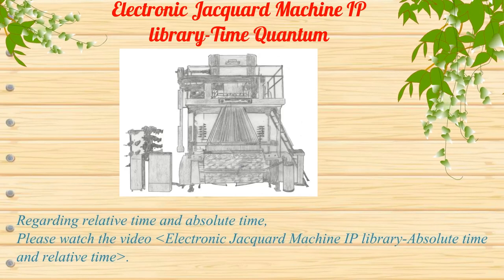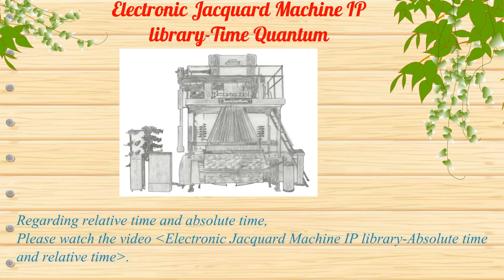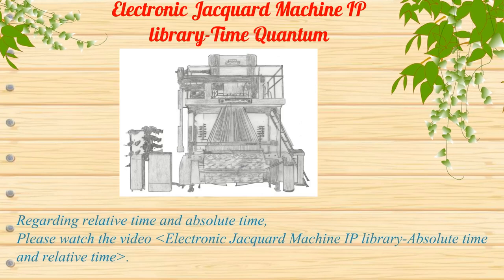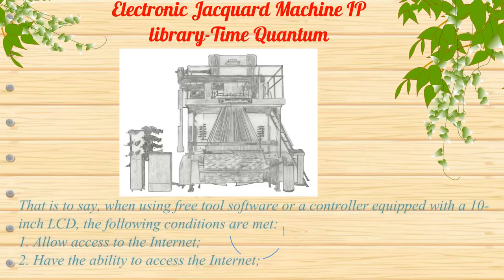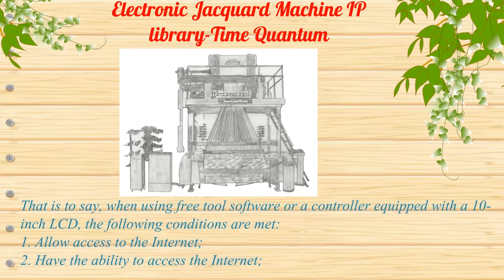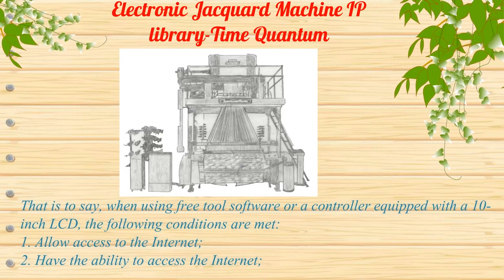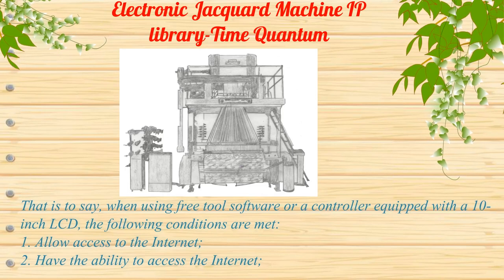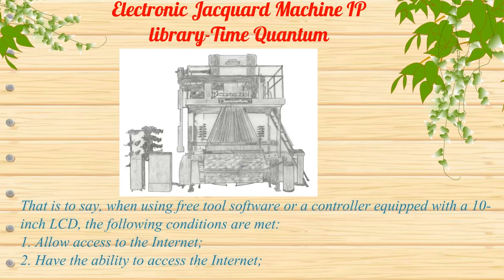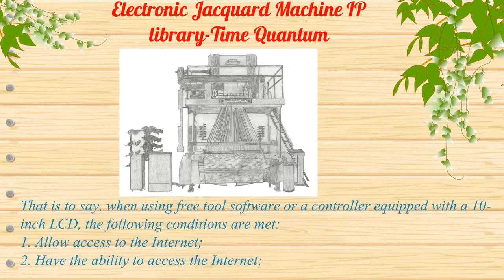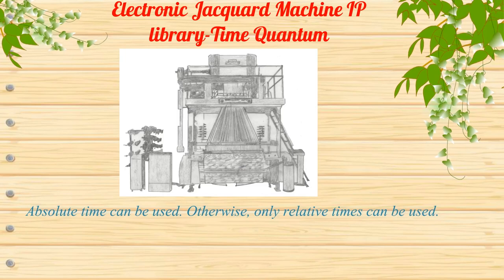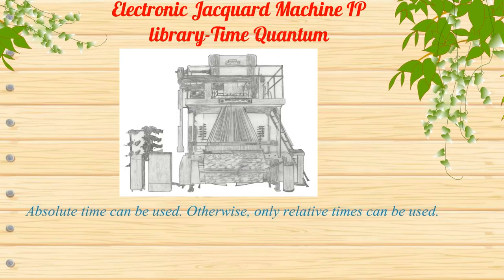Regarding relative time and absolute time, please watch the video 'Electronic Jacquard Machine IP Library: Absolute Time and Relative Time.' When using the free tool software or a controller equipped with a 10-inch LCD, if the following conditions are met — one, allow access to the internet; two, have the ability to access the internet — then absolute time can be used. Otherwise, only relative times can be used.